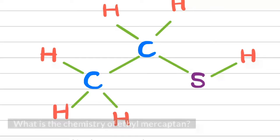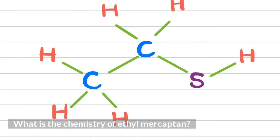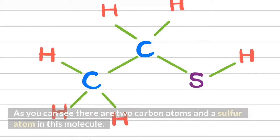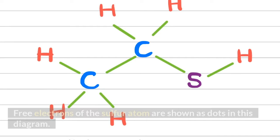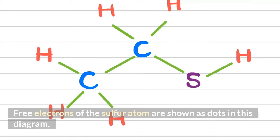What is the chemistry of ethyl mercaptan? As you can see, there are two carbon atoms and a sulfur atom in this molecule. The free electrons of the sulfur atom are shown as dots in this diagram.